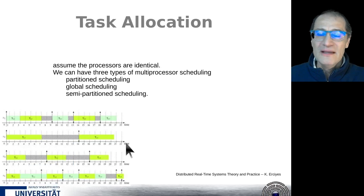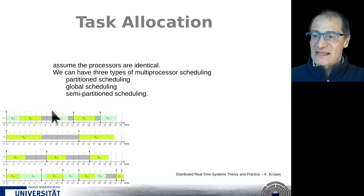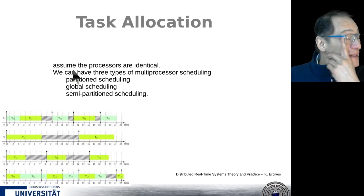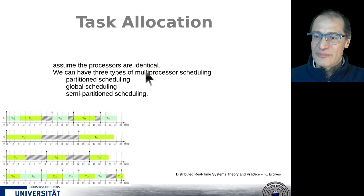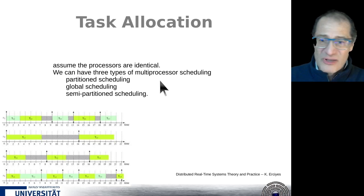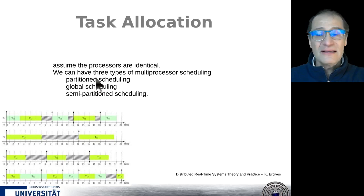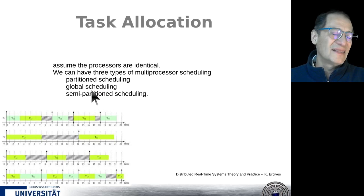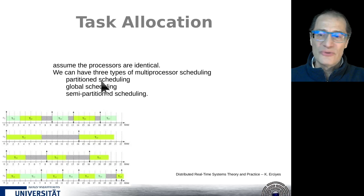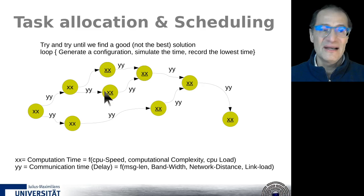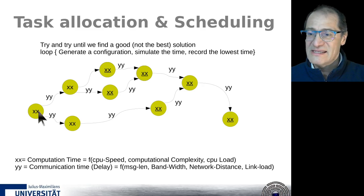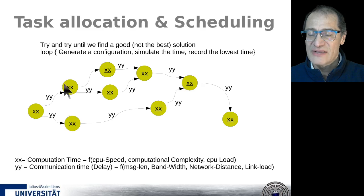Now let's talk about task allocation. To keep things simple, we assume all processors are identical, so any task can be executed on any processor. We can have three types of multi-processor scheduling: partitioning scheduling, global scheduling, and semi-partitioning scheduling. We will handle these at the end of this lesson. First, let's consider an example and try to do it ourselves. We have a set of applications — these circles — and this is the time each application will need.